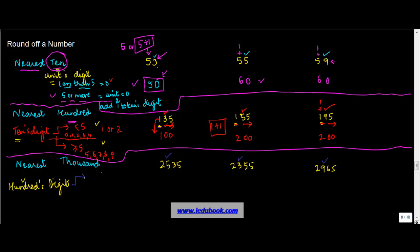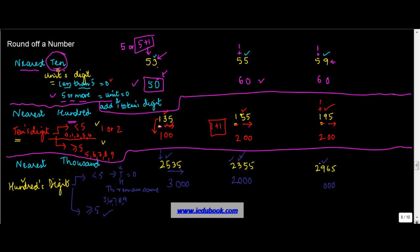The rule remains the same. If the hundreds digit is less than 5 — as in 2355 where it is 3 — the units, tens, and hundreds places all become 0 and the thousands place stays the same, giving 2000. If the hundreds digit is greater than or equal to 5 — as in 2535 with a 5, or 2965 with a 9 — you set those three digits to 0 and add 1 to the thousands place, giving 3000.